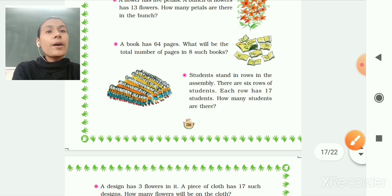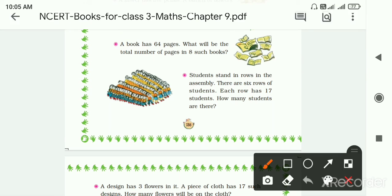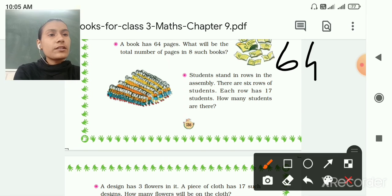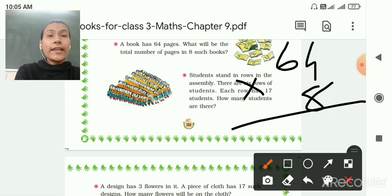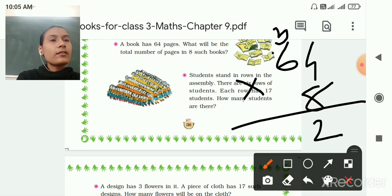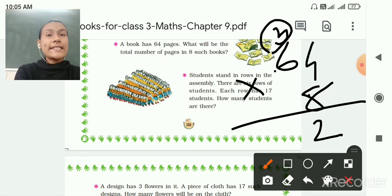Next, a book has 64 pages. What will be the total number of pages in 8 such books? So 64 multiply by 8. Now 8 multiply by 4 is equal to 32, so 2 here 3 carry. Now 8 multiply by 6, 8 6 are 48, 48 plus 3, 48, 49, 50, 51. So 512.